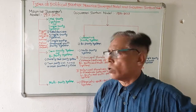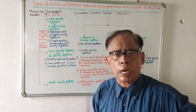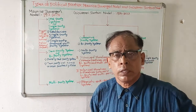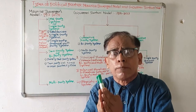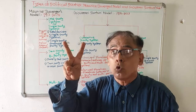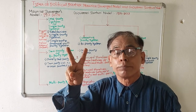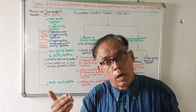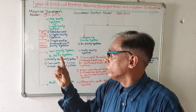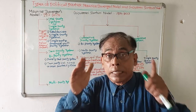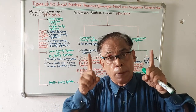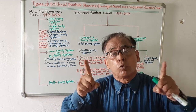The second category of political party in Duverger's model is the two party system or bi-party system. He has told that two party system or bi-party system means if in a country two major parties are found, it is known as bi-party system or two party system.